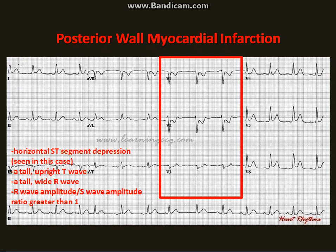It may present as ST changes in the right precordial leads V1 to V3 as horizontal ST segment depression, as seen in this case, a tall upright T wave, a tall wide R wave, or R wave amplitude to S wave amplitude ratio greater than 1.